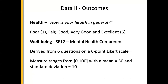For outcomes, we look at health and wellbeing. For health, we use the general self-assessed health score, which we reverse code so that poor is one and excellent health is five. For wellbeing, we use the SF-12 mental health component, derived from six questions using a six-point scale. The questions cover mental health, whether they accomplish less and work less carefully, whether they felt calm and peaceful, how much energy they had, whether they felt depressed, and whether mental health interfered with social interactions.